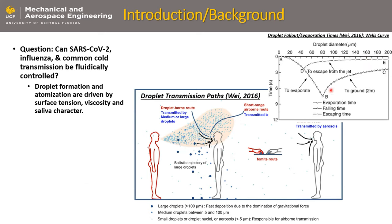And this is time. For very large droplets, they tend to fall to the ground — this is the time it takes a droplet to fall two meters to the ground. But at some point it evaporates faster than it falls to the ground and it becomes this airborne type path, or an aerosol.